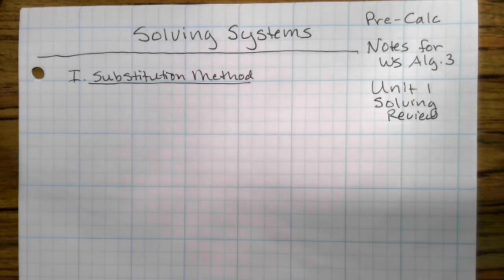Linear combination method, and graphical method. So those are our three main methods for solving systems.